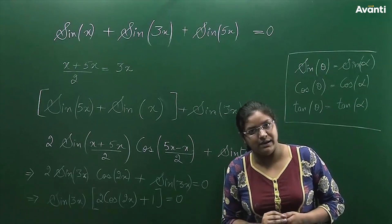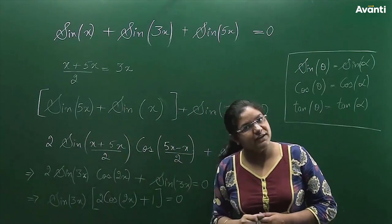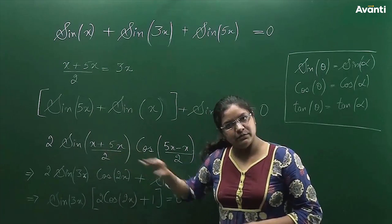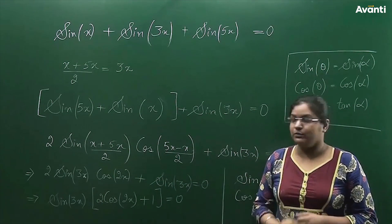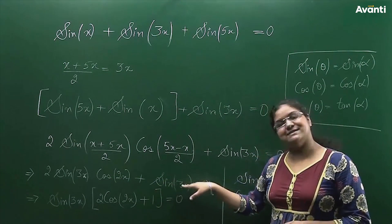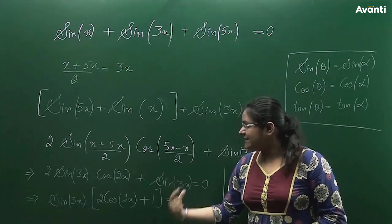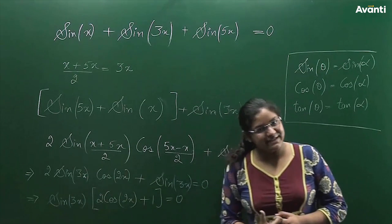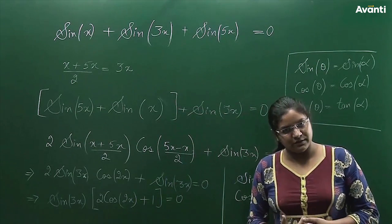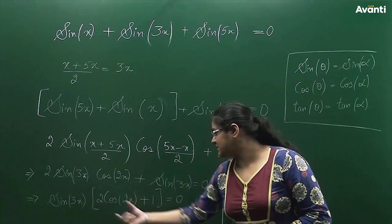So the equation becomes 2 sin(3x) cos(2x) + sin(3x) = 0. Both terms have sin(3x), so I factor it out, giving sin(3x) · (2 cos(2x) + 1) = 0. For this product to equal zero, either sin(3x) = 0 or 2 cos(2x) + 1 = 0.